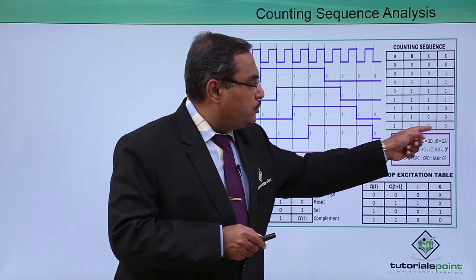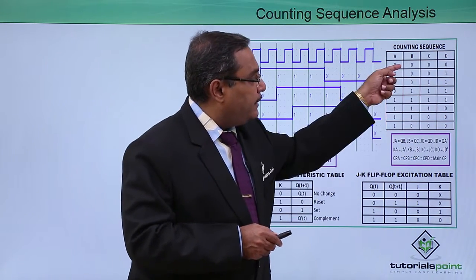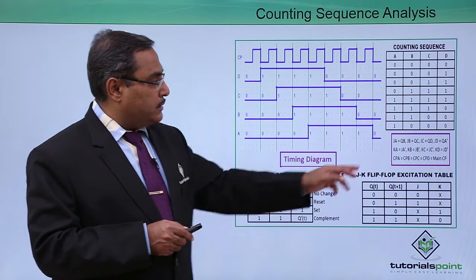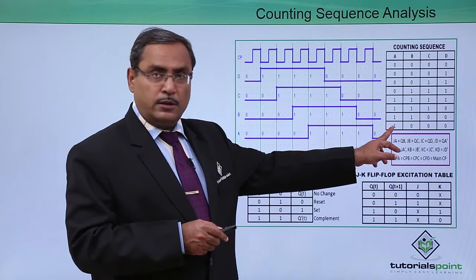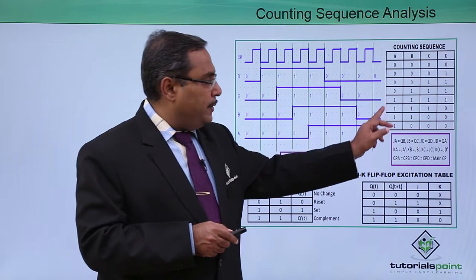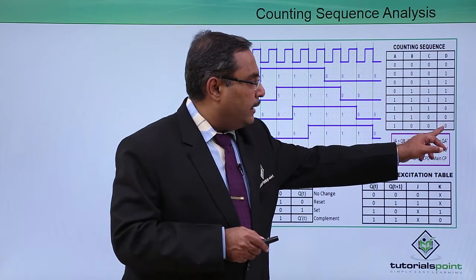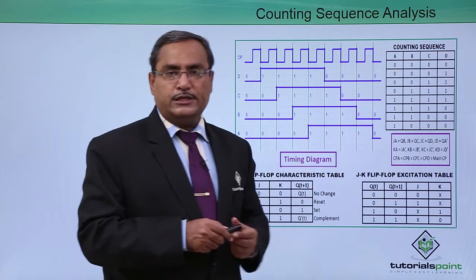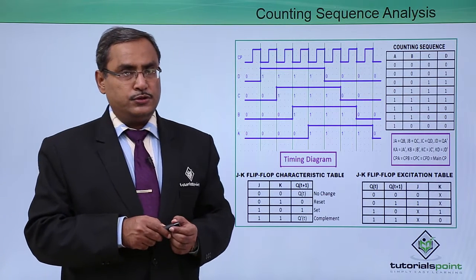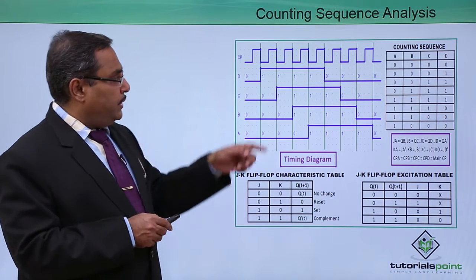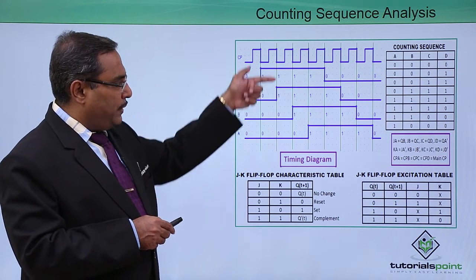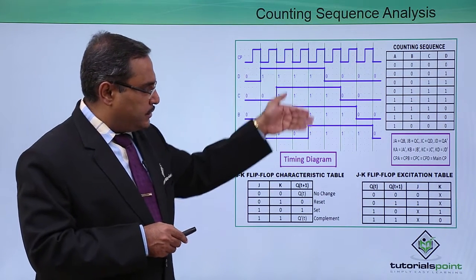Again after 1 0 0 0, I shall be finding 0 0 0 0 coming back because the complement of 1 is 0, so that 0 will be coming down here and the 3 zeros will have a shift. That is why again I shall be getting 0 0 0 0. Here you see its output is going to this flip-flop — its output is going to the flip-flop; in this way it is shifting.